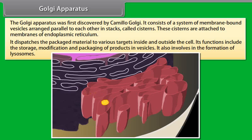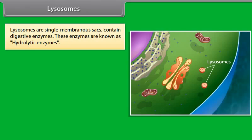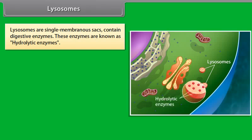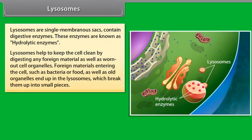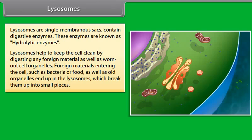The Golgi apparatus was first discovered by Camillo Golgi. It consists of a system of membrane-bound vesicles arranged parallel to each other in stacks called cisterns. These cisterns are attached to the membranes of the endoplasmic reticulum. It dispatches packaged material to various targets inside and outside the cell. Its functions include the storage, modification, and packaging of products in vesicles. It also involves the formation of lysosomes.